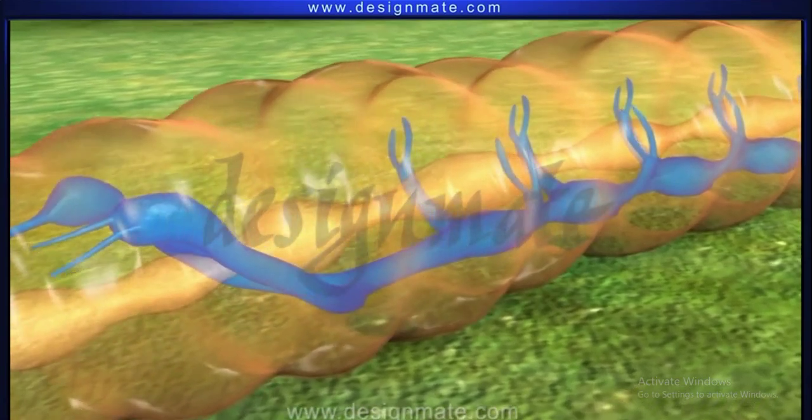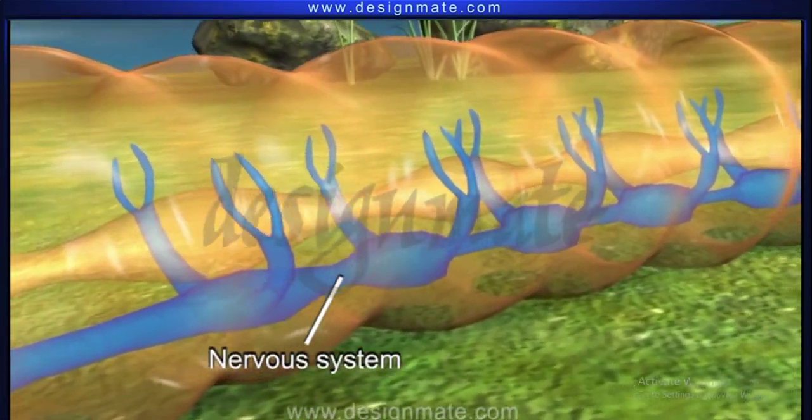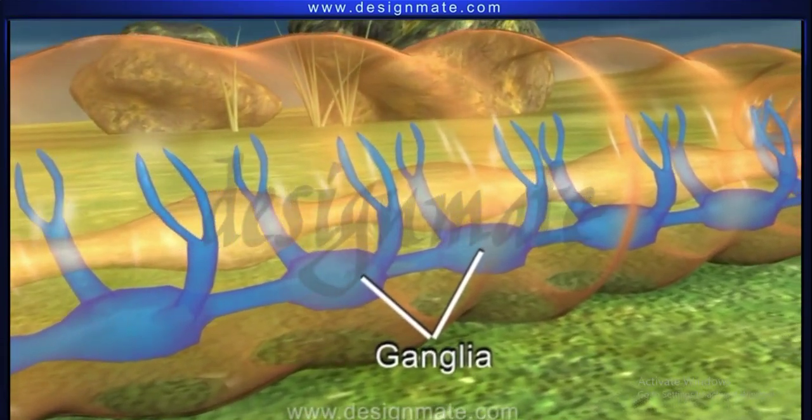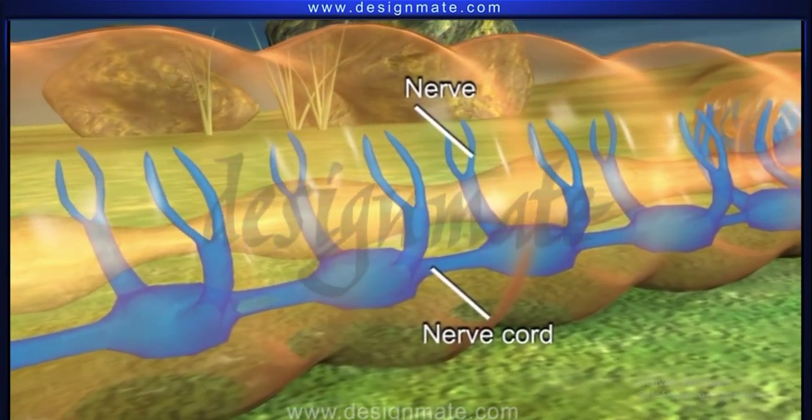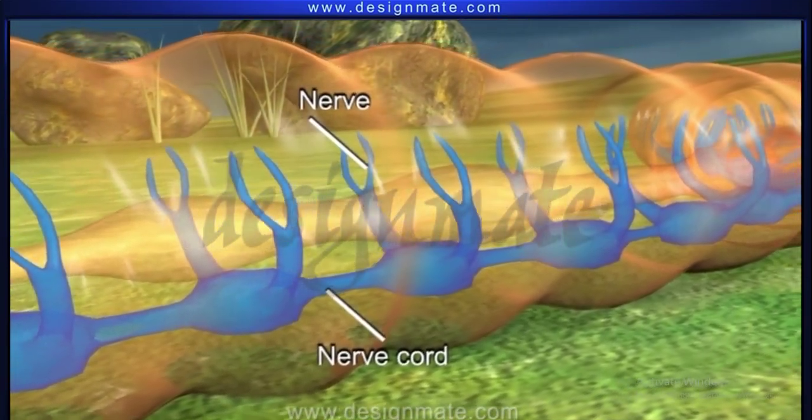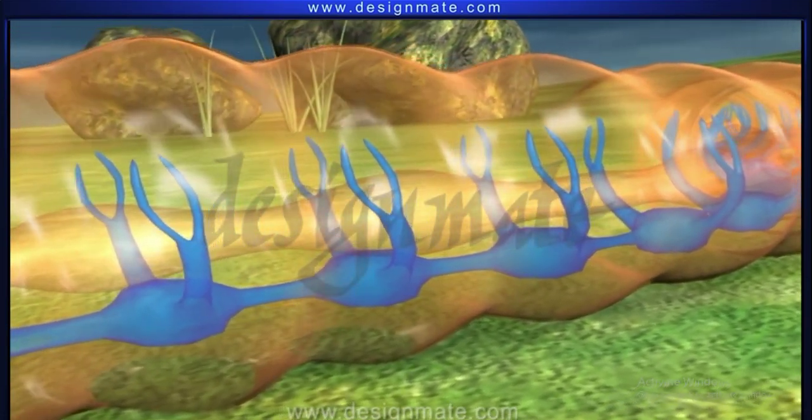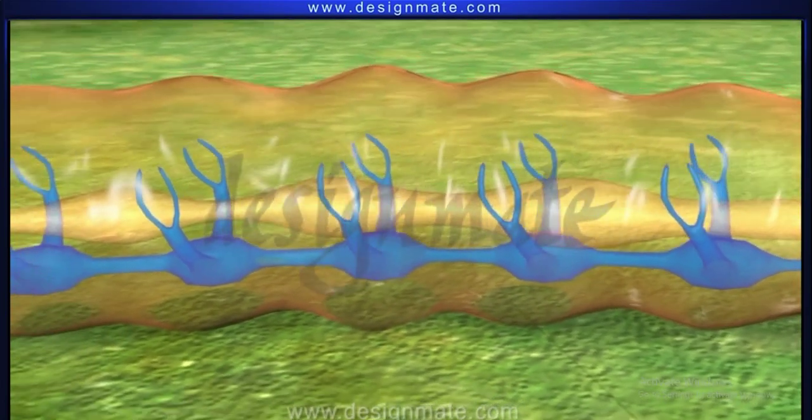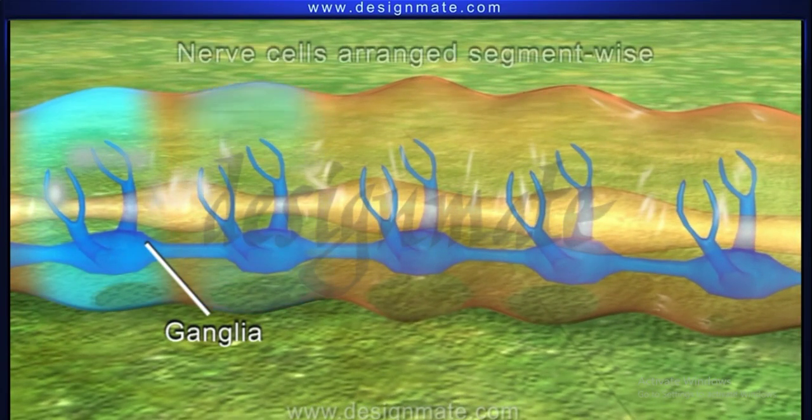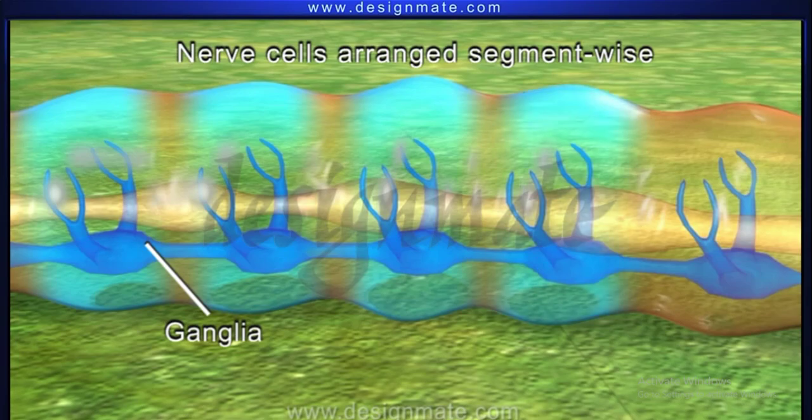The central nervous system consists of paired ganglia, nerve cord and nerves. Each ganglion is a mass of nerve cells arranged segment-wise.